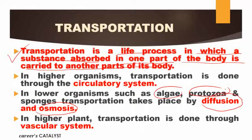For higher organisms, we have a well-developed circulatory system by which we are able to transport material in our body. In this video, we are going to discuss plants only. In higher plants, transportation is done by the vascular system. They have a well-developed vascular system by which they are able to transport material from one part to the remaining parts.